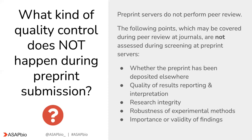Now, on the other side of the coin, what kind of quality control does not happen during preprint submission? Although preprints undergo a brief screening process, this process is not peer review. Critically, the following points are not assessed during submission to preprint servers: whether the submission has been deposited elsewhere; the quality of the results reporting and interpretation; and research integrity, robustness of the experimental methods, and the importance or the validity of the findings.